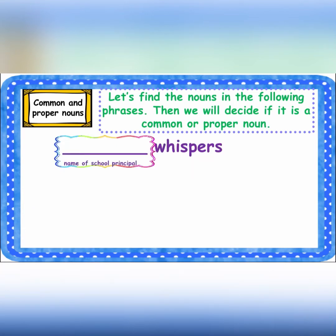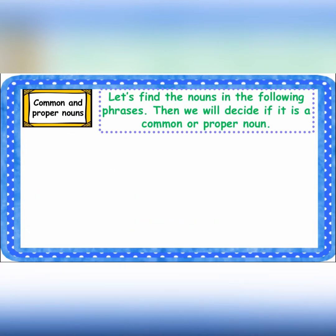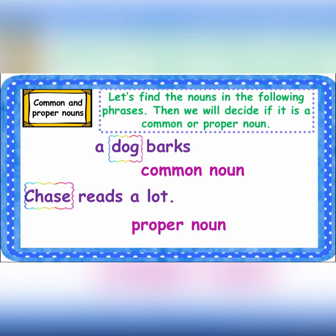Shop at Walmart — 'Walmart' is a proper noun. A dog barks — 'dog' is a common noun. Chase reads a lot — 'Chase' is a proper noun because it's specific.